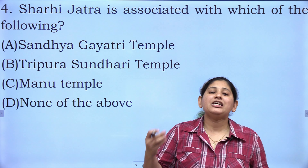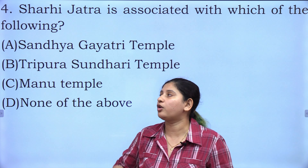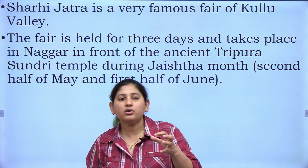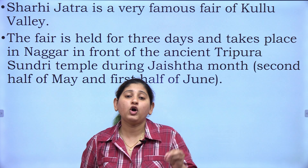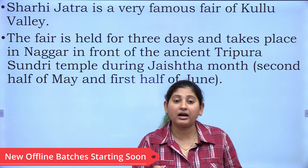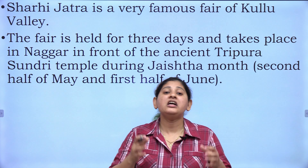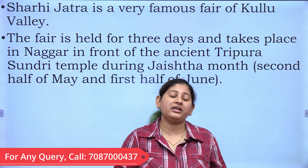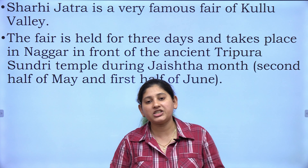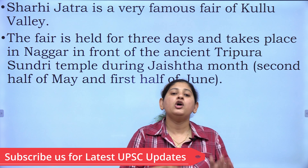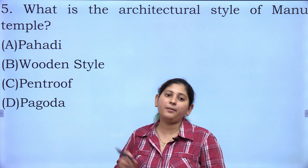The fourth question: Sharhi Jatra is associated with which of the following? A) Sandhya Gayatri temple, B) Tripura Sundari temple, C) Manu temple, or D) None of the above. Your correct answer is B) Tripura Sundari temple. Sharhi Jatra is a very famous fair of Kullu, held for 3 days at Naggar, in front of the ancient Tripura Sundari Mata temple, also known as Bala Sundari Mata. It is held during the month of Jeshtha, which falls in May and early June as per the Hindi calendar.